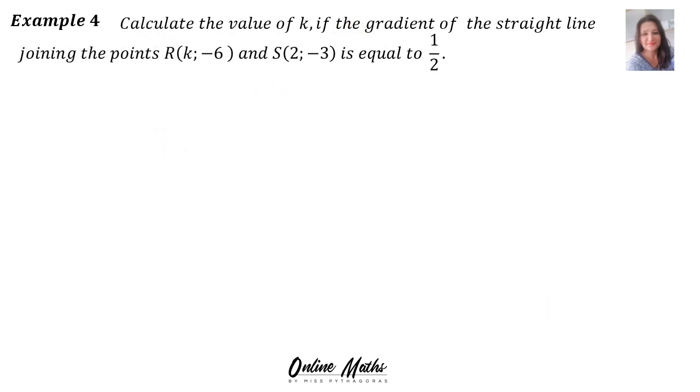Example 4: Calculate the value of k if the gradient of the straight line joining the points R(k,-6) and S(2,-3) is equal to a half. Now, how this sum differs from the others is that now the gradient is given. Usually we ask the gradient. And the other problem is that on your point, one of your points, there's a missing coordinate. So the x coordinate at R is now a variable.